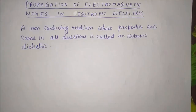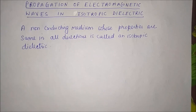Let us see the propagation of electromagnetic waves in isotropic dielectric. A non-conducting medium whose properties are same in all directions is known as an isotropic dielectric.